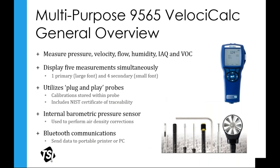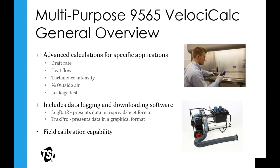Just a couple of slides for a quick overview. The 9565 VelociCalc is a multipurpose instrument that works with a suite of different probe types for indoor air quality, flows, velocity, pressure, and so on. These probes are plug-and-play with all calibration stored within the probe, so the probe's calibration follows the meter. It features an internal barometric pressure sensor for air density corrections, Bluetooth data communication, and logging and downloading software.